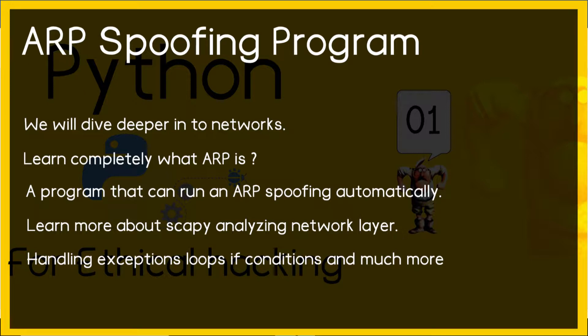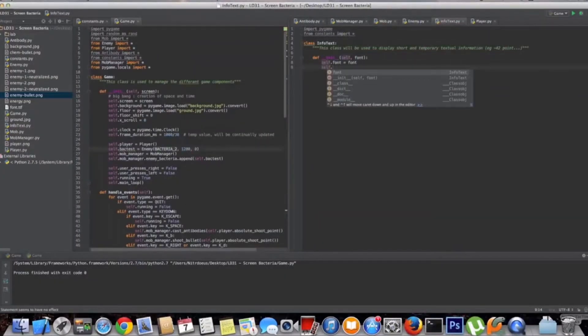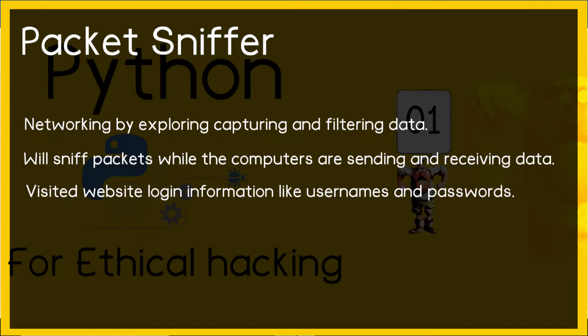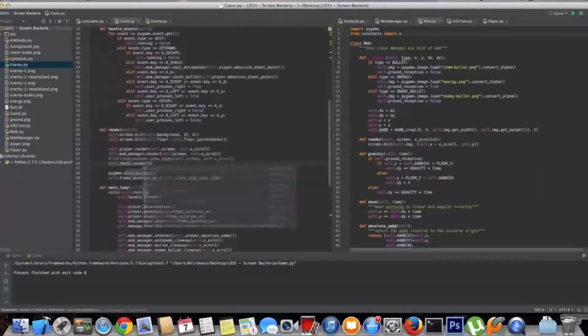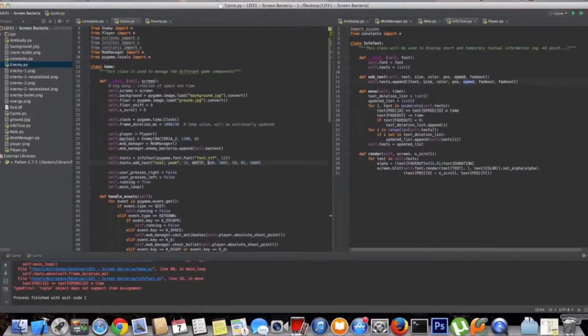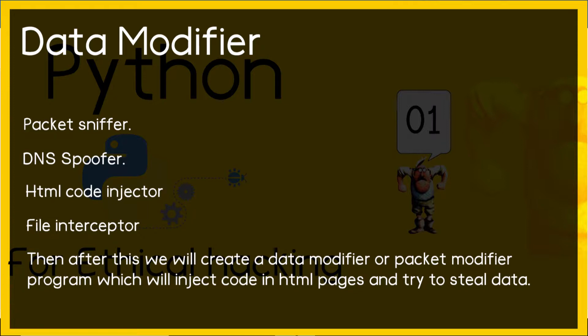After the ARP spoofing program, we'll explore capturing and filtering data by creating a packet sniffer program in Python. This program will sniff packets while computers connected to the same network are sending and receiving data. This means we will be able to see visited websites, login information like usernames and passwords, and pretty much everything they are doing on the internet.